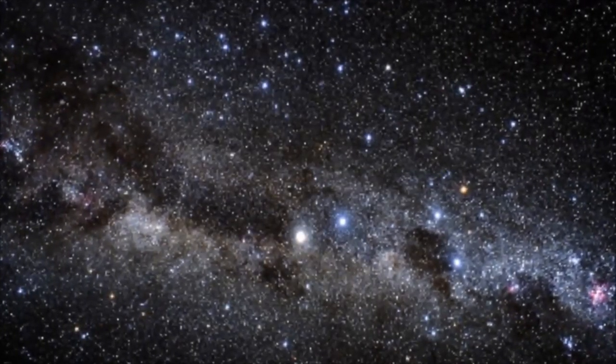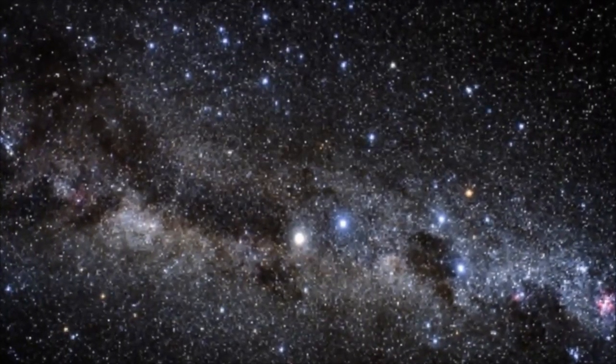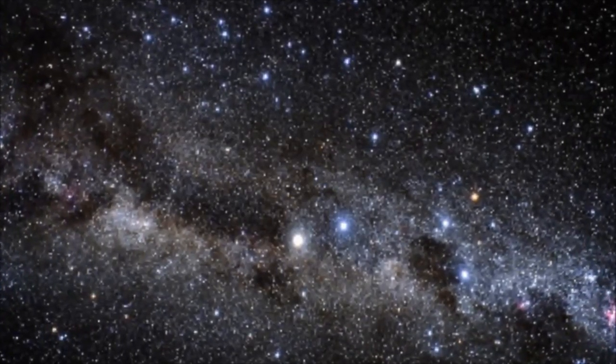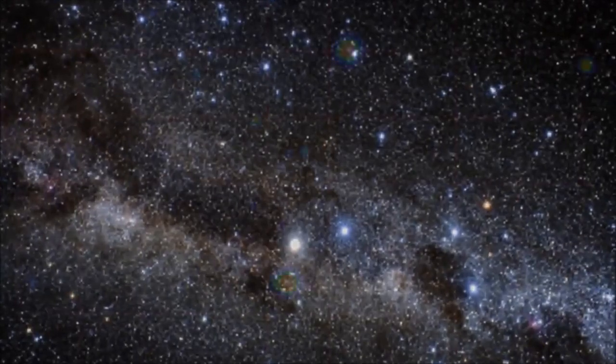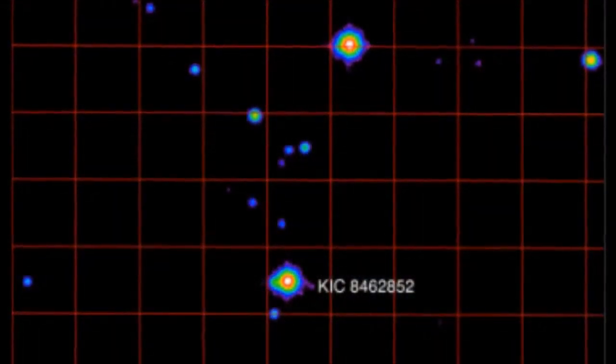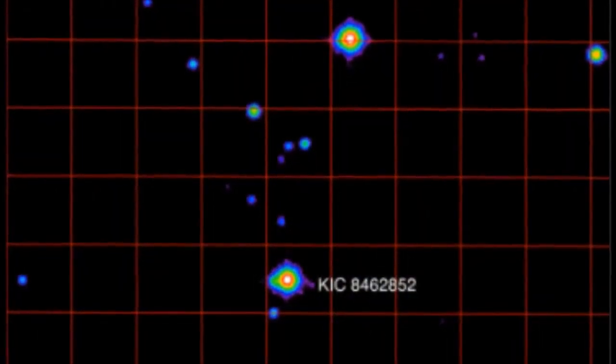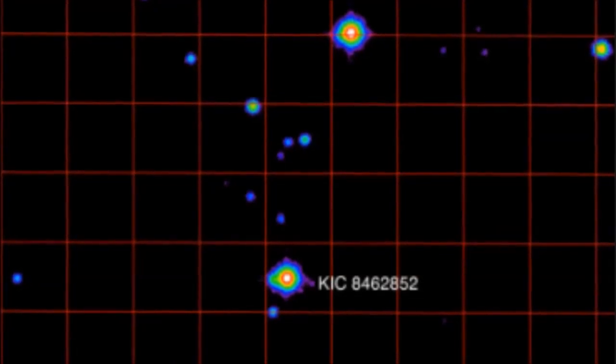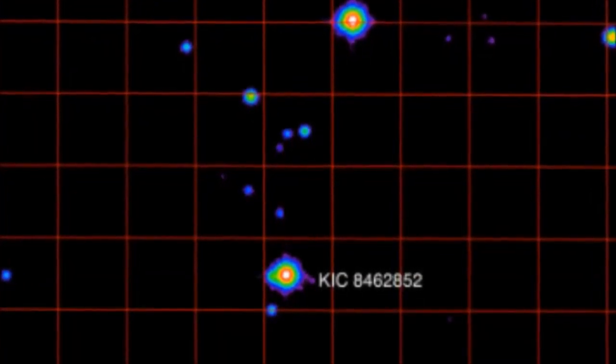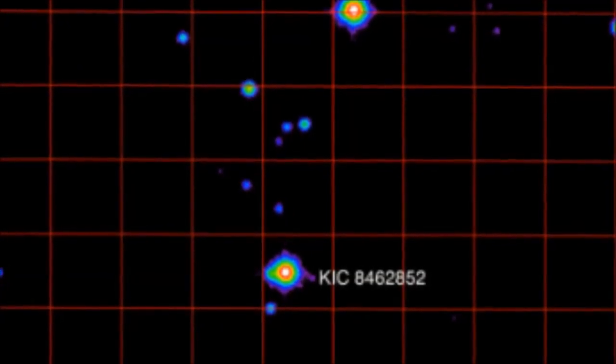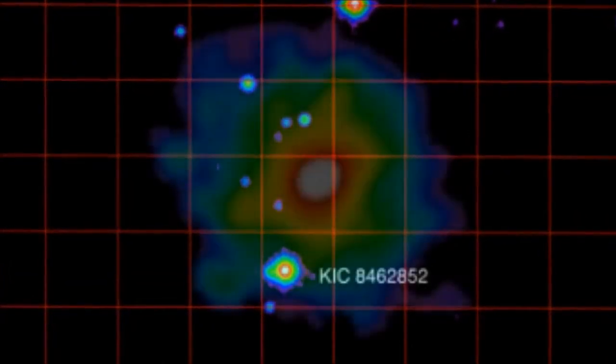Researchers have revealed a bizarre star they say could be surrounded by a huge alien megastructure. KIC 8462852, located 1,480 light years away, was monitored by the Kepler Space Telescope for more than four years, beginning in 2009.